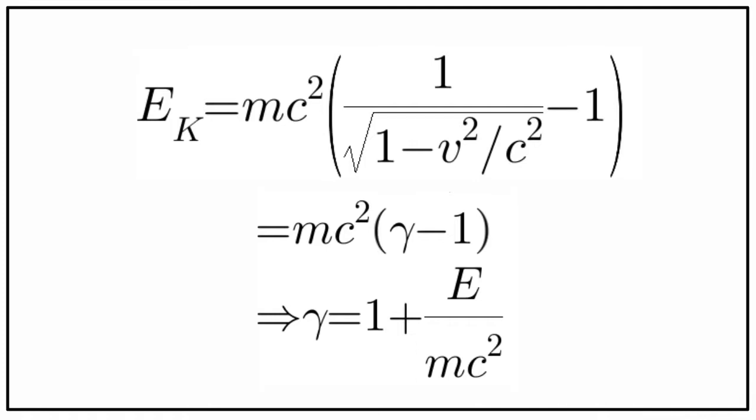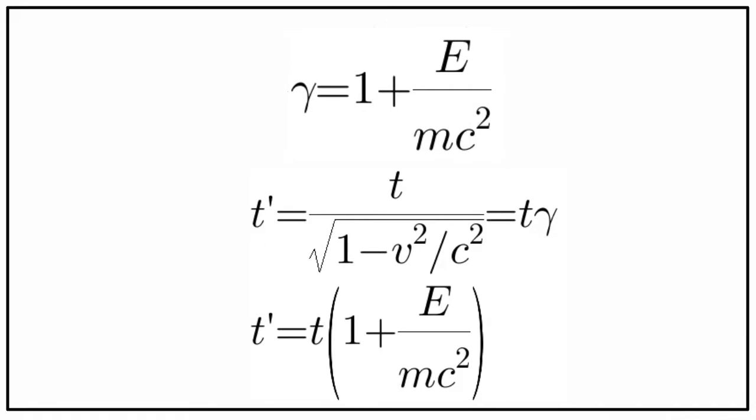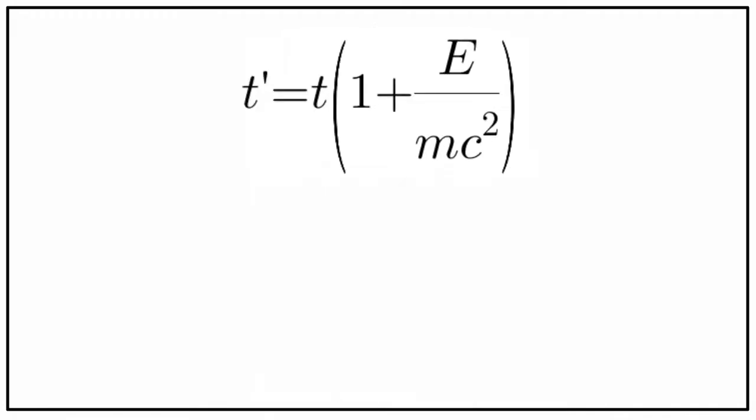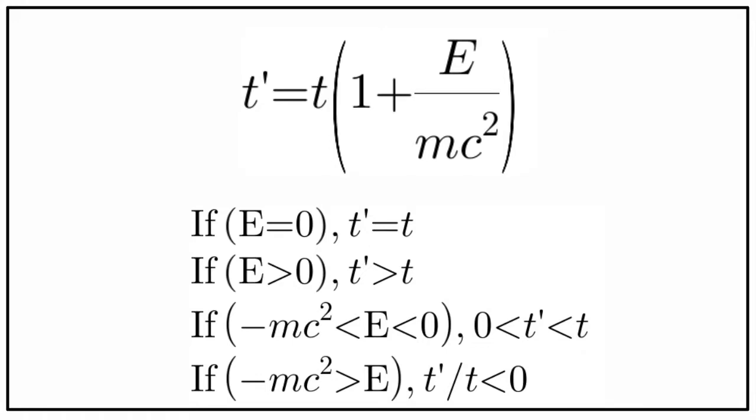Now if we substitute this value to our time dilation equation, which tells us how time will pass for the moving and rest observer, on substituting the value of gamma factor we get this equation. Now notice this equation carefully. When E equals zero, the time dilated is equal to time. That means if a body is not moving, then time will pass equally.